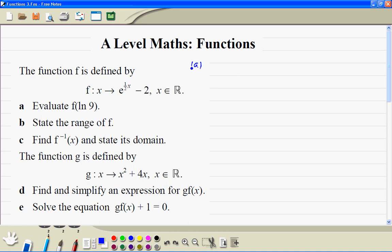So here's part a. We want f(ln9), so e to the power of half x, replace x by ln9, minus 2. That's e to the power of half ln9, which becomes ln of square root of 9, which is 3, minus 2. Then e and ln cancel each other out, so it's 3 minus 2, which equals 1.